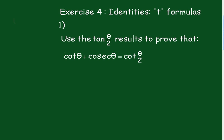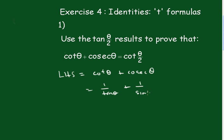I'm going to start with the left hand side. Left hand side is equal to cot θ plus cosec θ, which is 1 over tan θ plus 1 over sin θ. Now tan θ is 2t over 1 minus t squared, so turning it upside down we get (1 minus t squared) over 2t, plus sin θ is 2t over 1 plus t squared, so that's (1 plus t squared) over 2t.